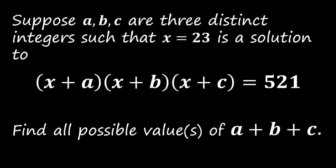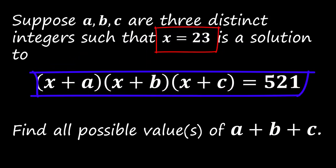Here is the challenge. Suppose A, B, C are three distinct integers such that x = 23 is a solution to (x + A)(x + B)(x + C) = 521. The task is to find all possible values of A + B + C.